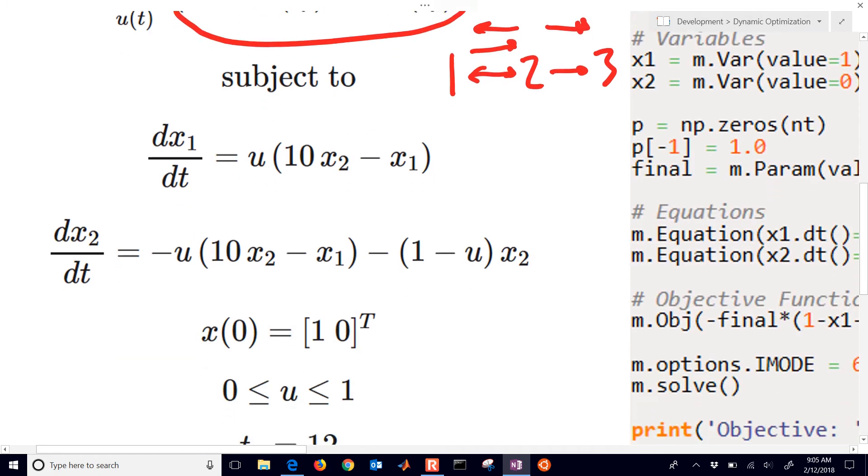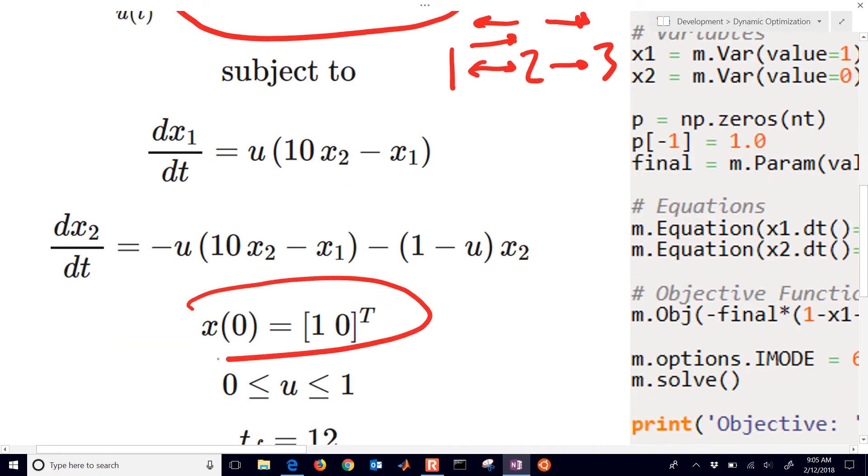We also have another initial condition here. This is our x1 and x2 initial condition. And that's at time 0. So x1 is going to start off at 1, and it'll drop. x2 is going to increase. And then x3 will also increase as well. Just put dotted line there. We'll show how to put in the x3 value as well.